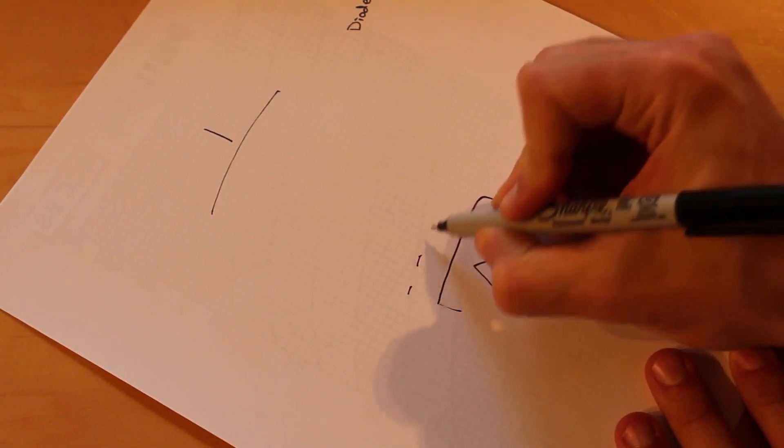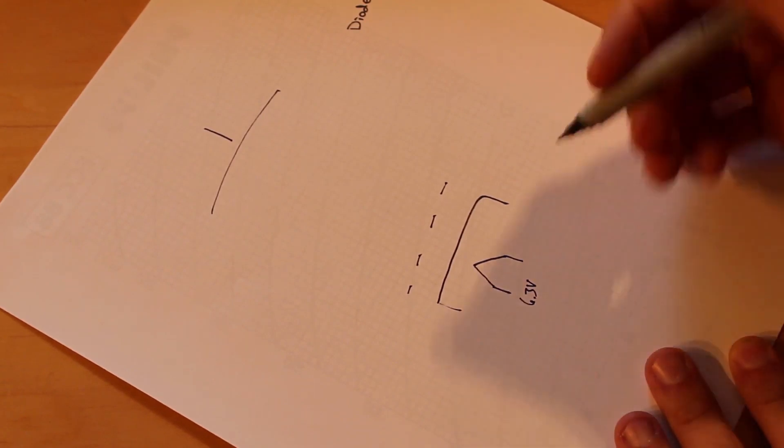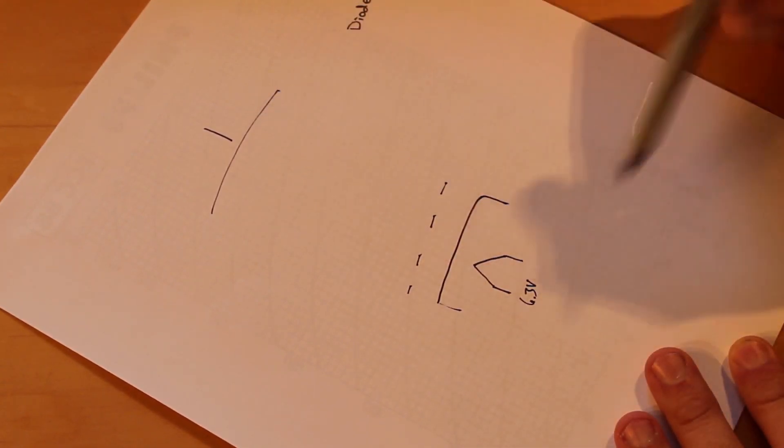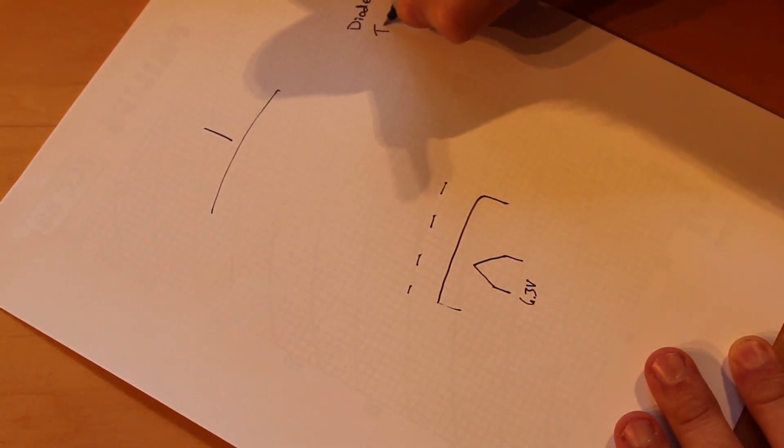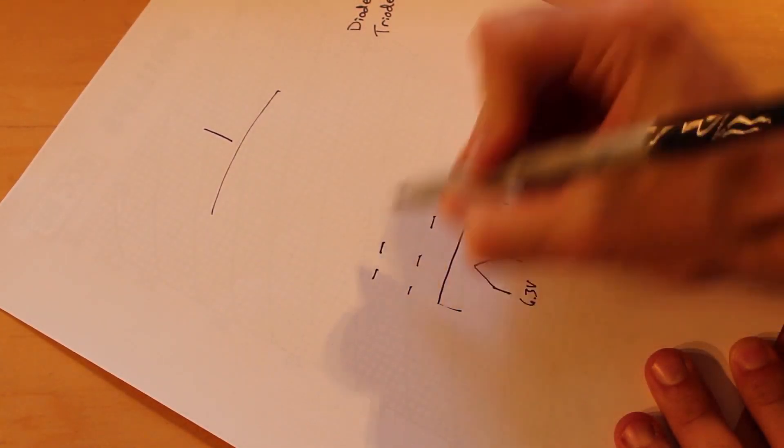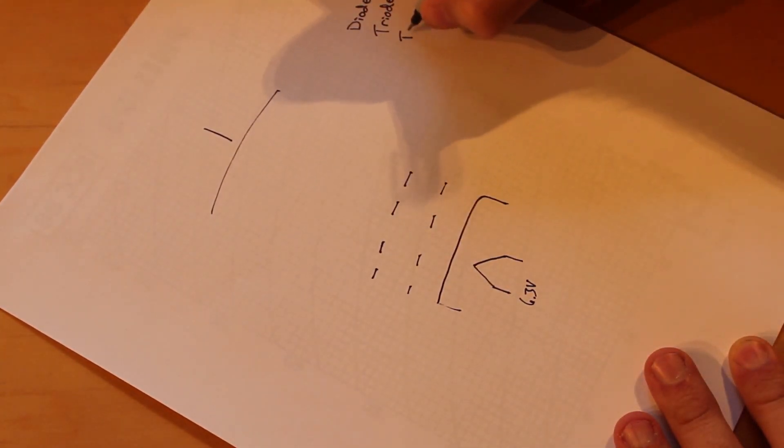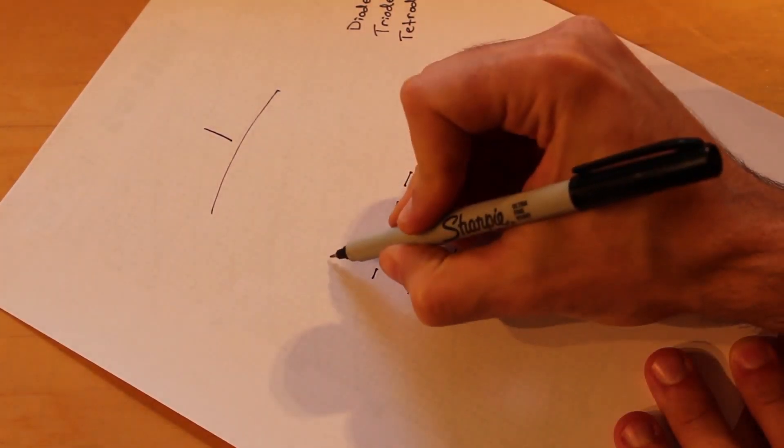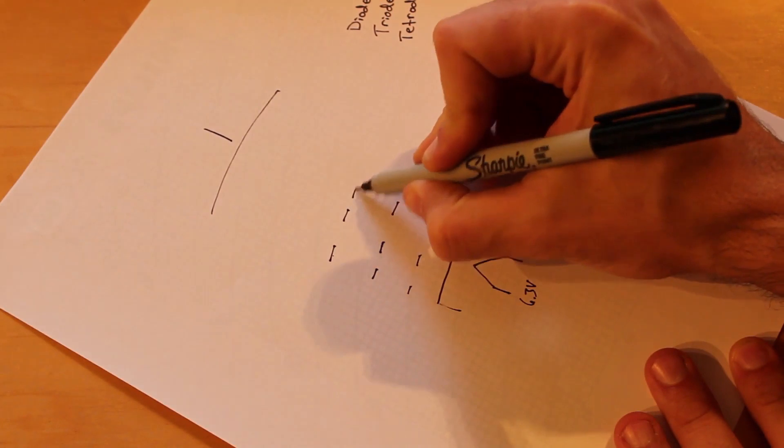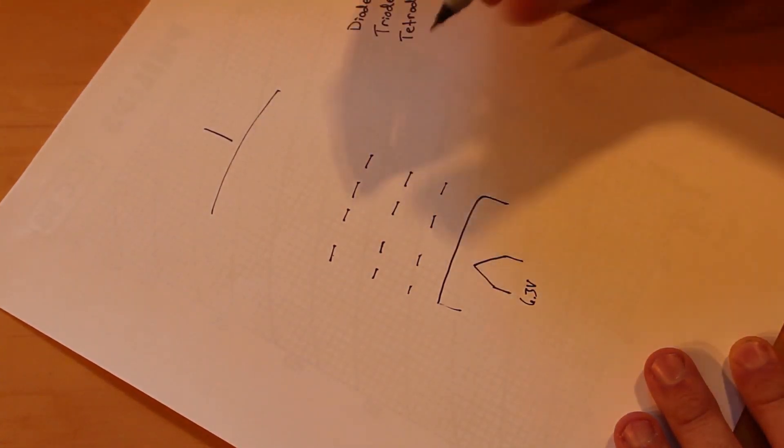So if we add in a little grid along the bottom here, that is now three elements. One, two, three. So that makes it a triode. And let's just keep adding grids in. Let's add in another grid right here. That's now four elements, so that makes it a tetrode. And then we add in one more element here. And now we've got five elements. So one, two, three, four, five. And this is a pentode.